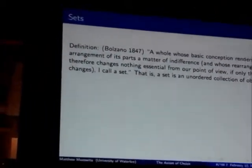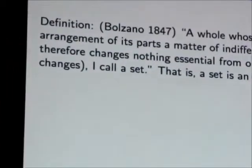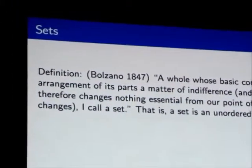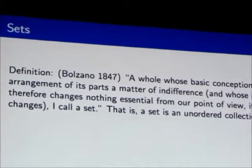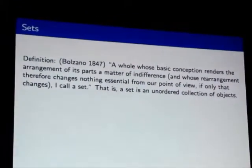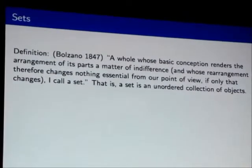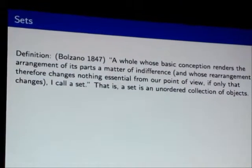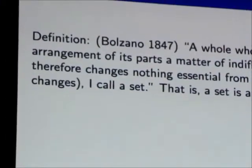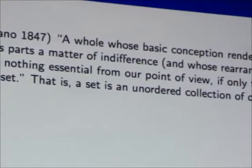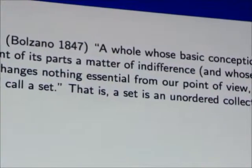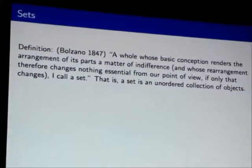Modern mainstream mathematics is written in the language of sets, and this was the first abstract definition of set I could find from Bolzano in 1847. Before this, people would talk about arbitrary sets of numbers, but this was the very first totally abstract definition of set I could find. It's a whole whose basic conception renders the arrangement of its parts a matter of indifference. This is written in kind of flowery language, but all he means is it's a collection of objects. The order that you present those objects is unimportant.